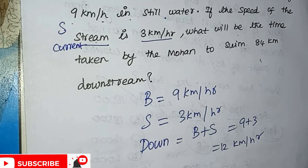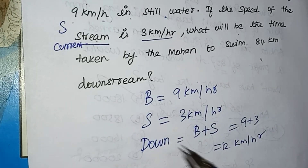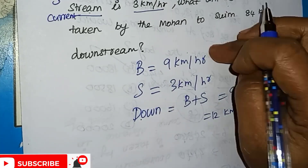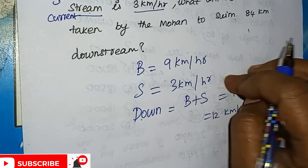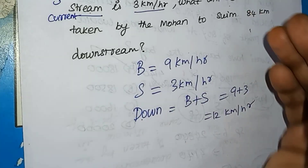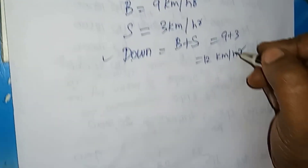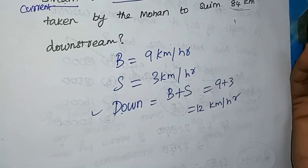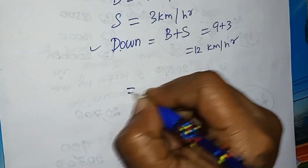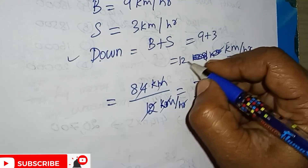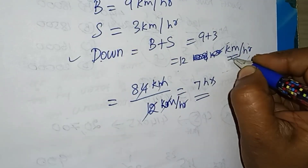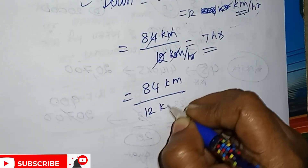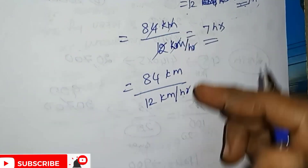Going downstream, we add the speed of the boat and stream. Speed downstream is 12 km per hour. Time equals distance divided by speed, so time equals 84 km divided by 12 km per hour, giving 7 hours. The answer is 7 hours.